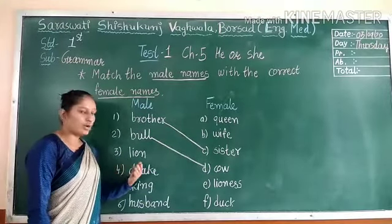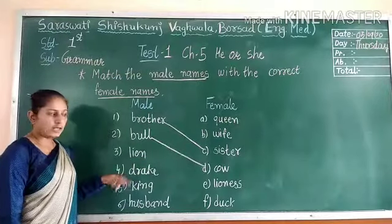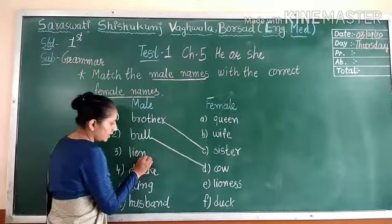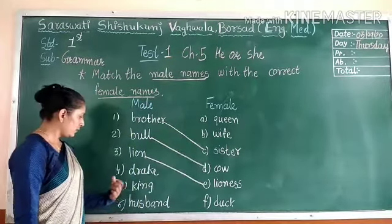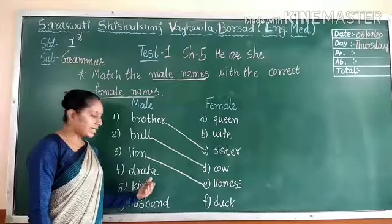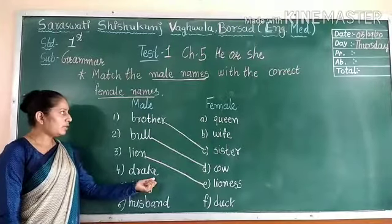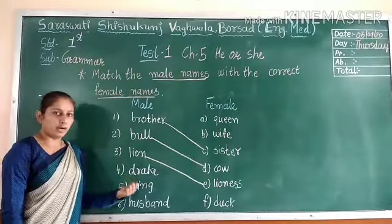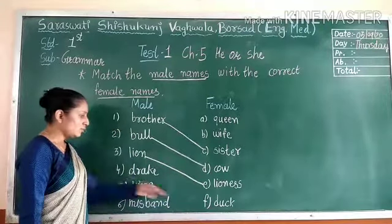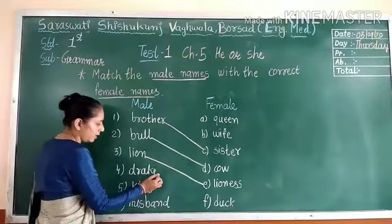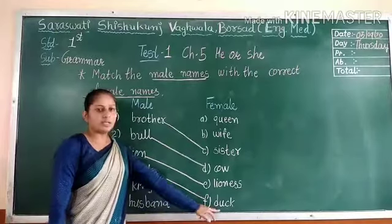Third number: Lion. Lion is also a male naming word of an animal. The female naming word of lion is Lioness. You have to match lion with lioness. Fourth: Drake. Drake means the male naming word of the bird. What is the female naming word of drake? Duck. You have to match drake with duck.